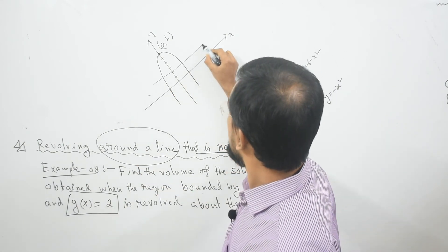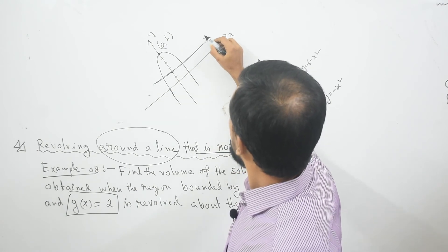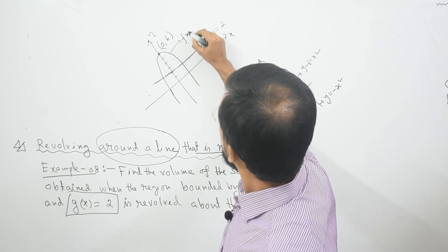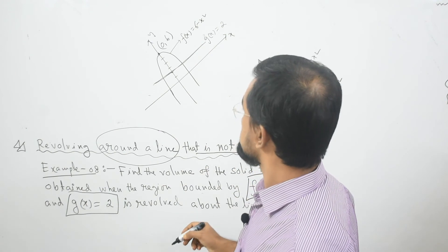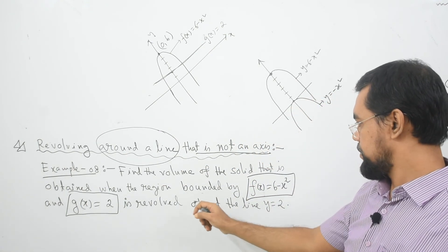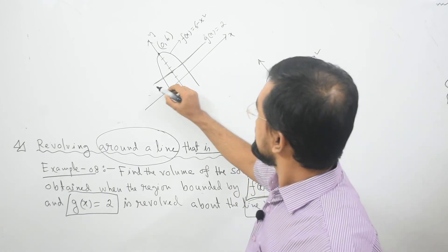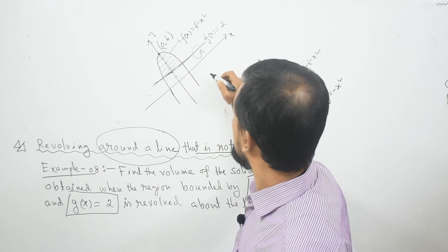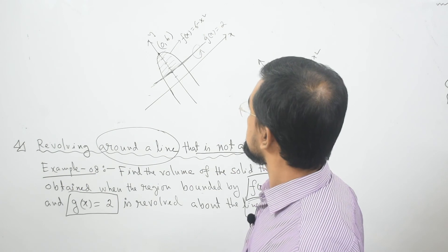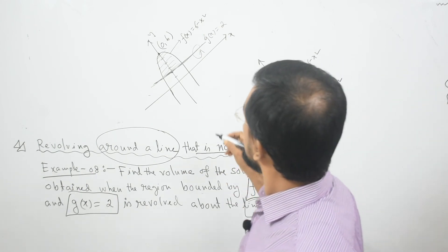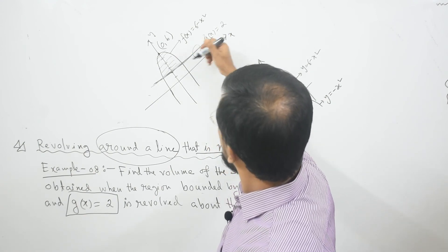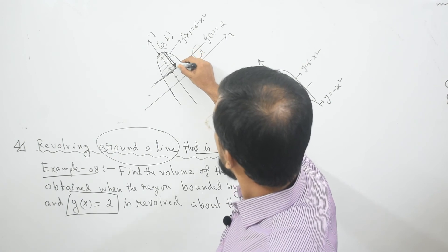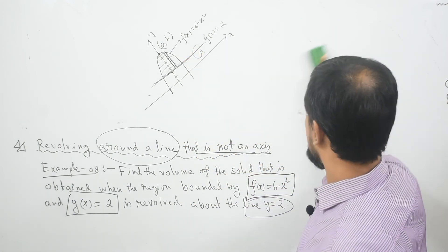Another curve is y equal to 2, which is a horizontal line. So g(x) equal to 2 is this line and f(x) equal to 6 minus x square is our parabola. If you revolve this region about the line y equal to 2, the cross section will be perpendicular to the x-axis. Therefore our formula will be the first one: integral from x equal to A to x equal to B of π times [radius]² dx.